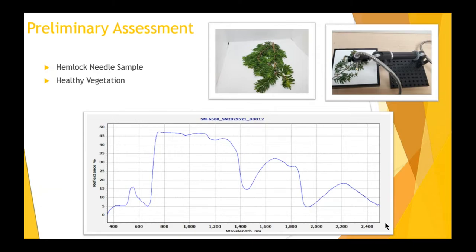I placed the precision probe directly over the needle I wanted to sample, shown in the top right-hand picture, and acquired the spectra. A user would have to be very specific on what they were measuring in case of contaminating the field of view with either the branch or the twig also attached to the needle. We currently have the probe set up with a fixed mount, which made it easy to swivel the probe to different constituents that we wanted to measure.